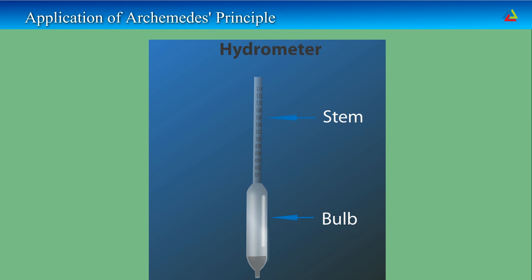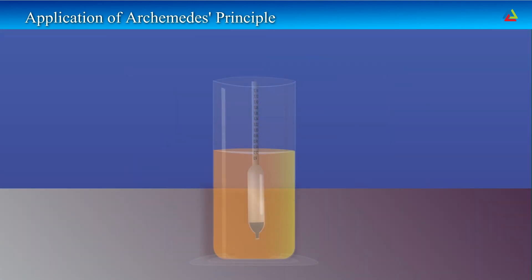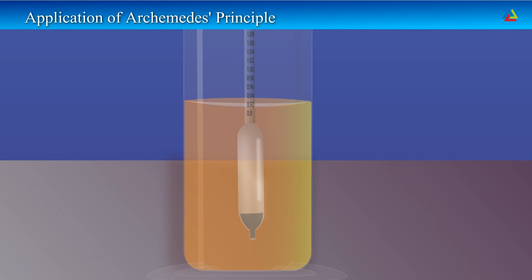The bulb contains mercury or lead deposit to make it heavy. This ensures that the hydrometer is afloat upright in the liquid. To determine the density, the liquid is poured into a tall jar and a hydrometer is lowered gently to float freely in the liquid. The hydrometer reading at the level of the liquid gives the density of the liquid. If we pour mustard oil in the jar, then we can say the density reading is approximately 0.92 grams per centimeter cube.